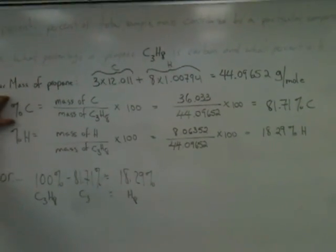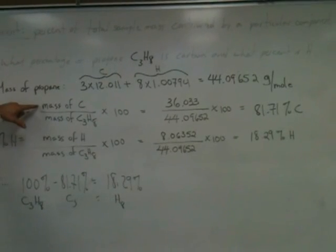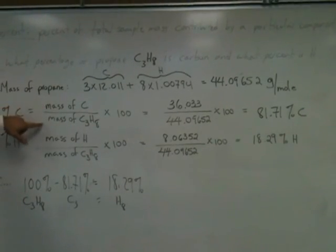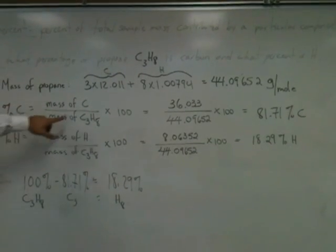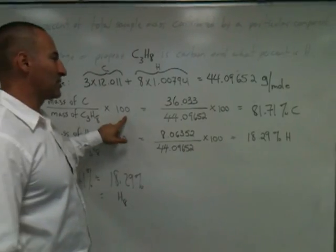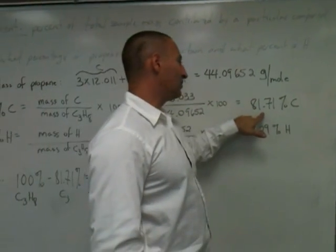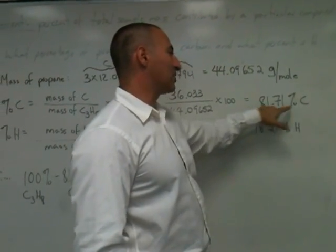If we want to find the percent carbon in propane, we find the mass of carbon alone, divided by the mass of the whole molecule, and multiply by 100 to turn it into a percentage. We get that propane is 81.71% carbon.